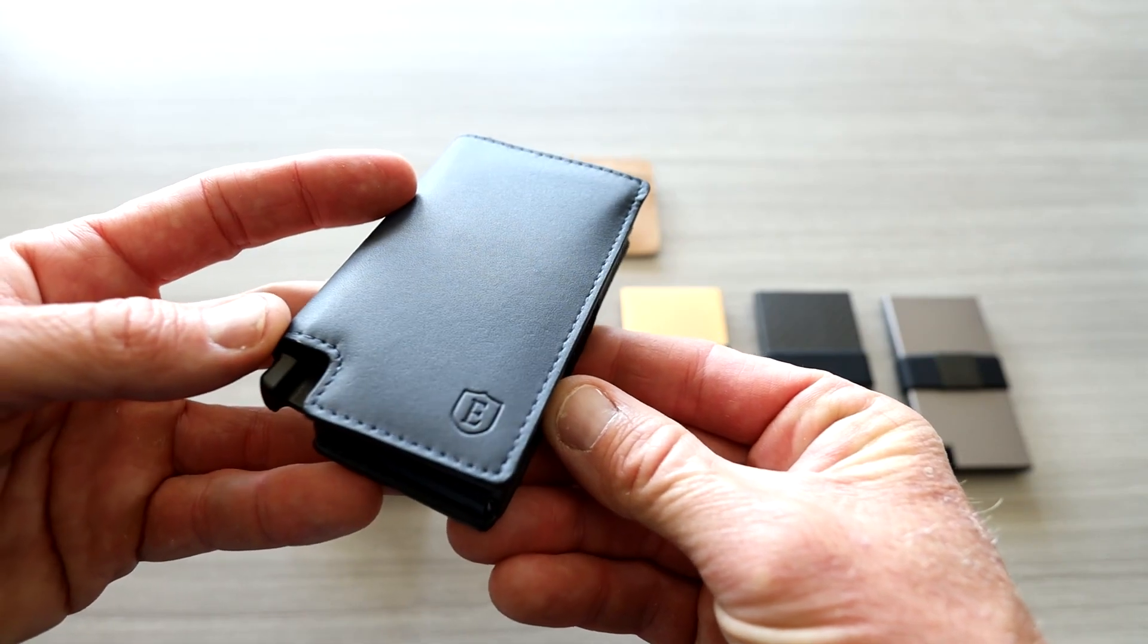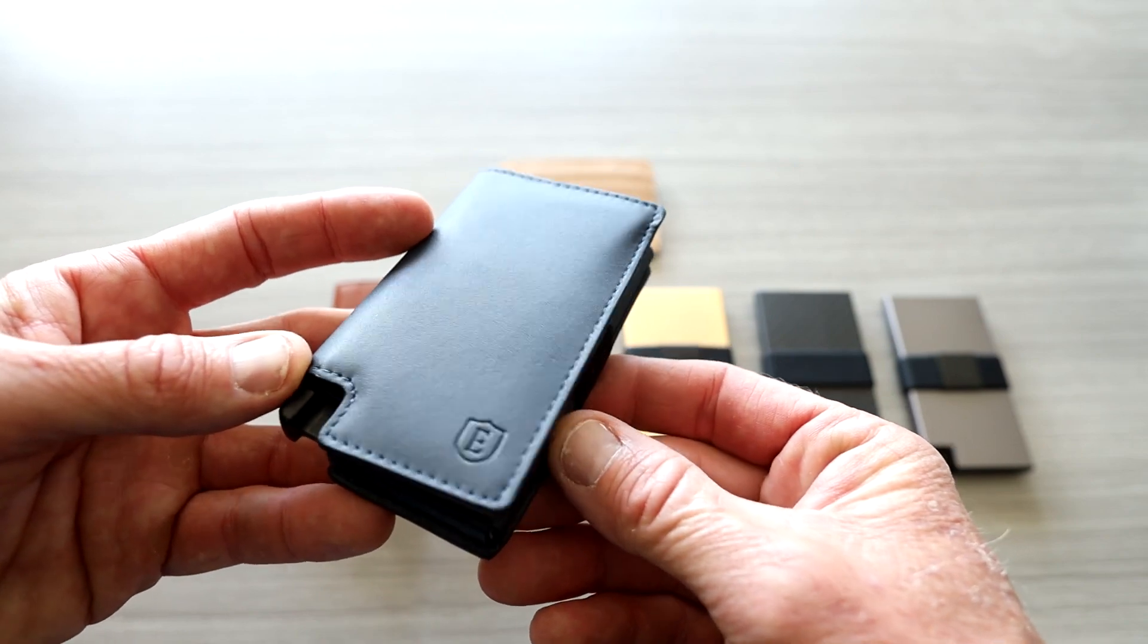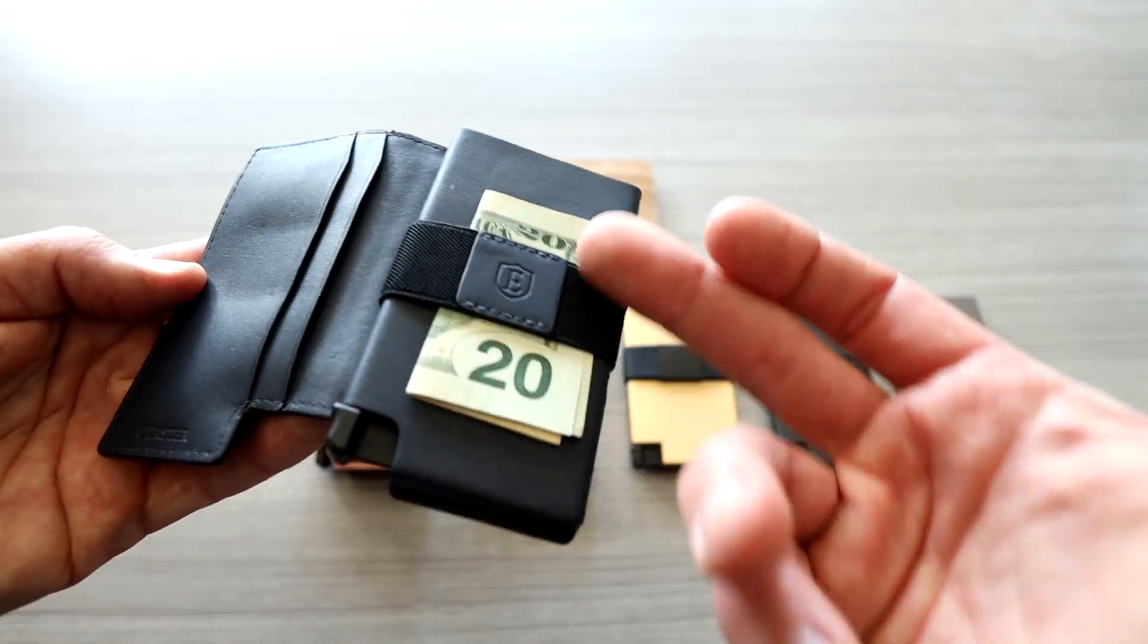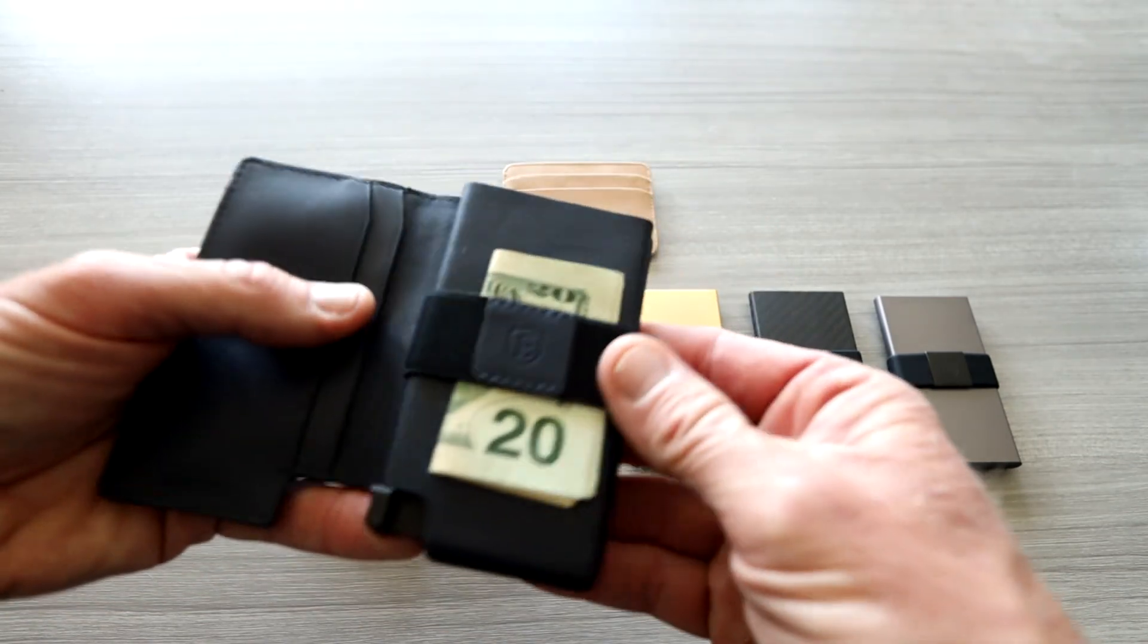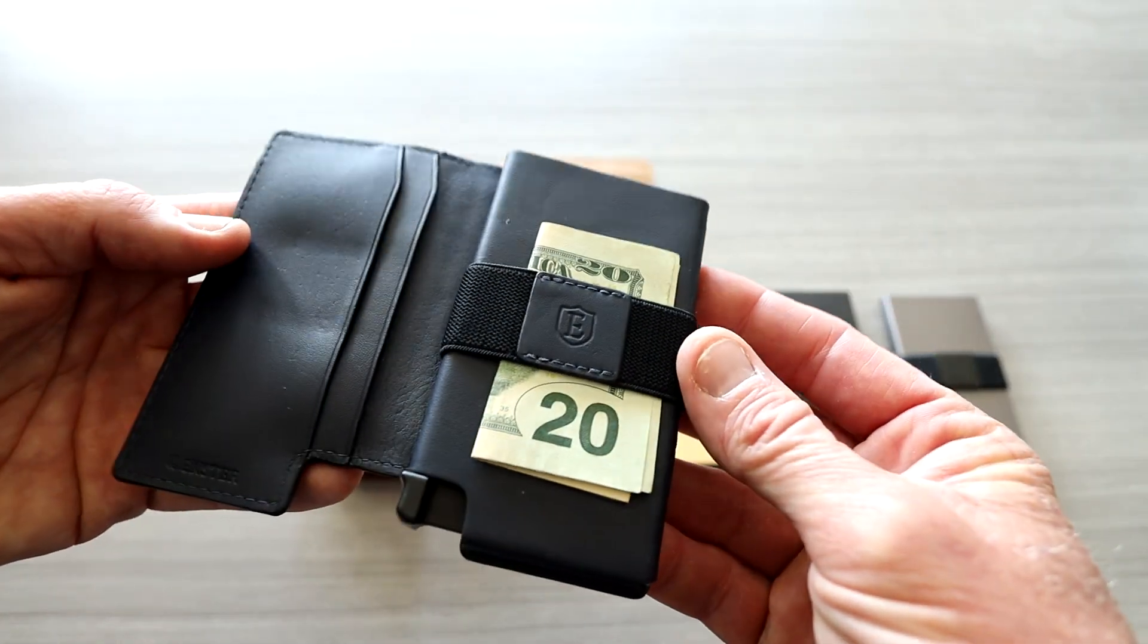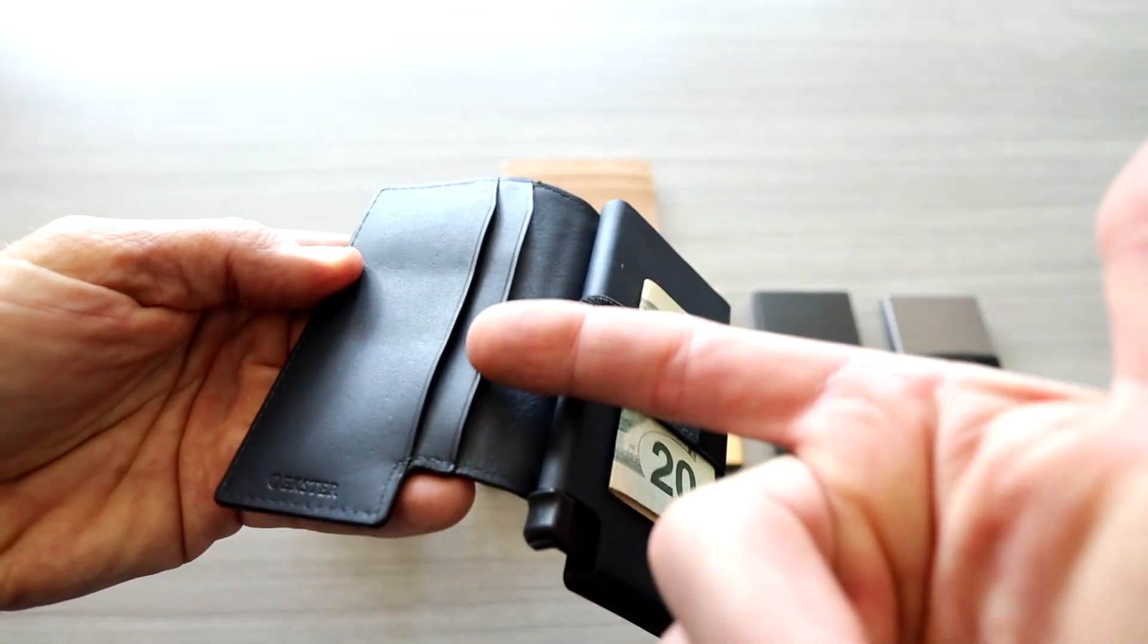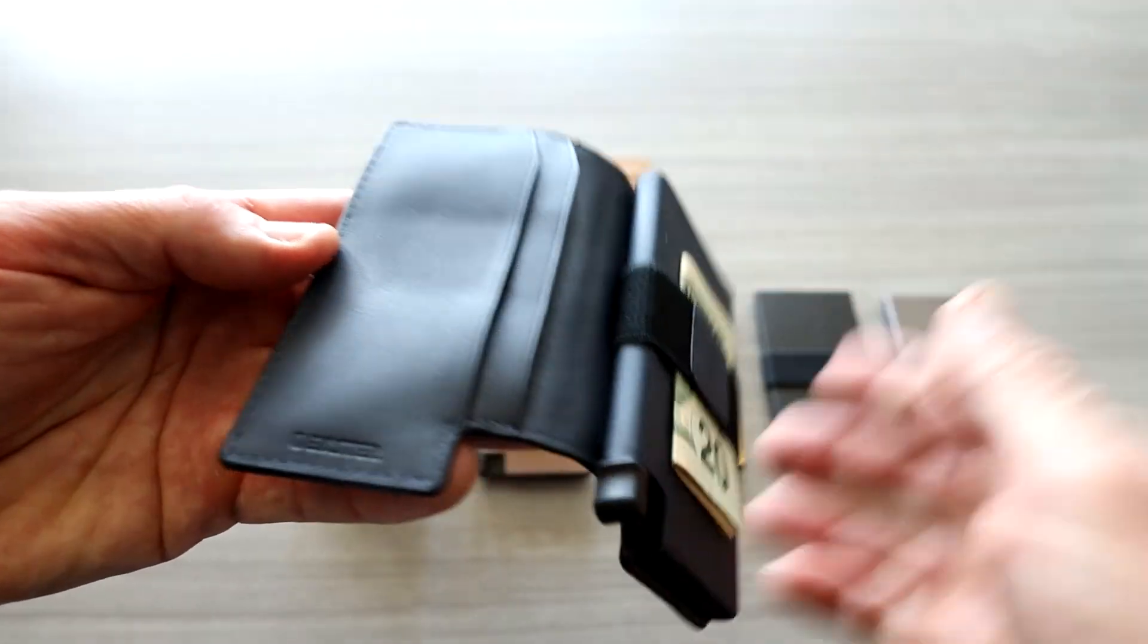First up is the Parliament wallet, which comes in a bunch of different colors. This is the navy, which is a beautiful wallet. The Parliament has a front cover that opens up for your cash strap right here. This is all interconnected, all stitched together. So this is one big piece, you can't remove anything. You have an opening in the back right here for cash or cards, another opening right here. So you have two along the side, logo right here, beautiful stitching throughout the wallet.